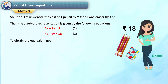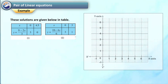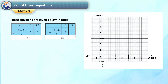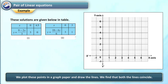To obtain the equivalent geometric representation, we find two points on the line representing each equation — that is, we find two solutions of each equation. These solutions are given below in a table. For the first equation, when x is equal to 0, y is equal to 3, and when x is equal to 4.5, y is equal to 0. Similarly, for the second equation, when x is equal to 0, y is equal to 3, and when x is equal to 3, y is equal to 1. We plot these points on graph paper and draw the lines.